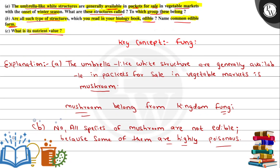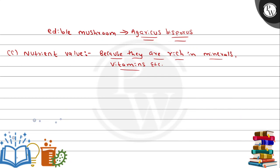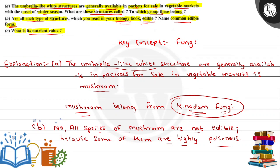So, the first question's answer: the umbrella-like structure is called mushroom. Mushroom belongs to kingdom fungi. Are all such structures edible? No, all species of mushrooms are not edible; some are highly poisonous and only a few species are edible. What is the nutritive value? They are rich in minerals and vitamins. I hope you understood this question. Thank you and best of luck.